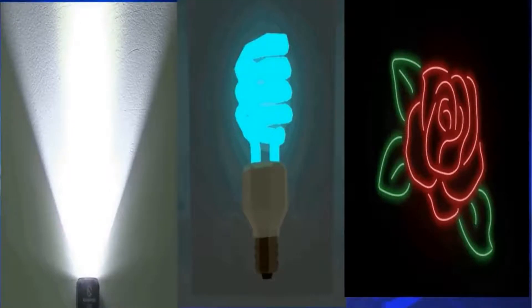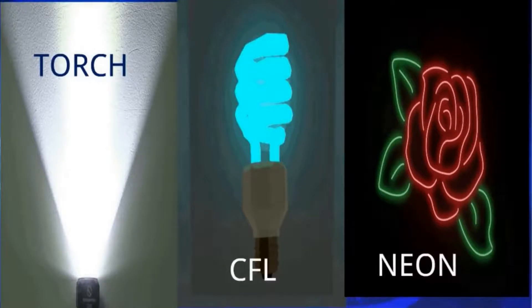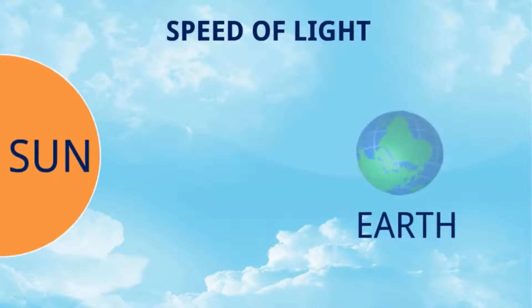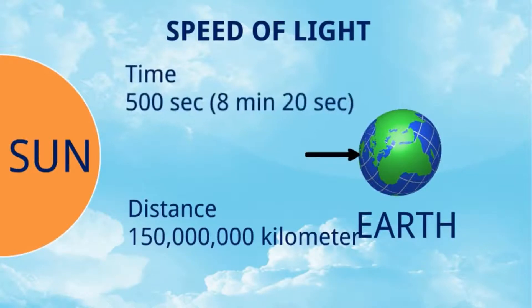Speed of light: we know light comes from the sun and the distance between the sun and earth is 150 million kilometers. Do you know how much time light takes to travel this path? It is only 500 seconds, that means 8 minutes and 20 seconds. So light is the fastest thing in the universe. We can say its speed is 3 lakh kilometers per second.